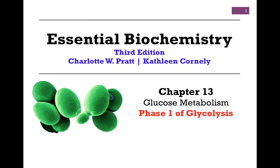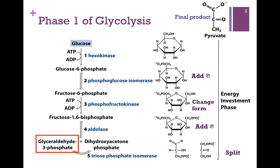In our second lesson on glucose metabolism from Chapter 13, we'll be looking at Phase 1, the first five steps of glycolysis. Here's an overview of those five steps. Our final product in the pathway will be pyruvate, illustrated at the top of the screen here. Our goal in the first five steps is to take a molecule of glucose — a six-carbon compound — add a phosphoryl group to either end of the molecule, and split it in two.